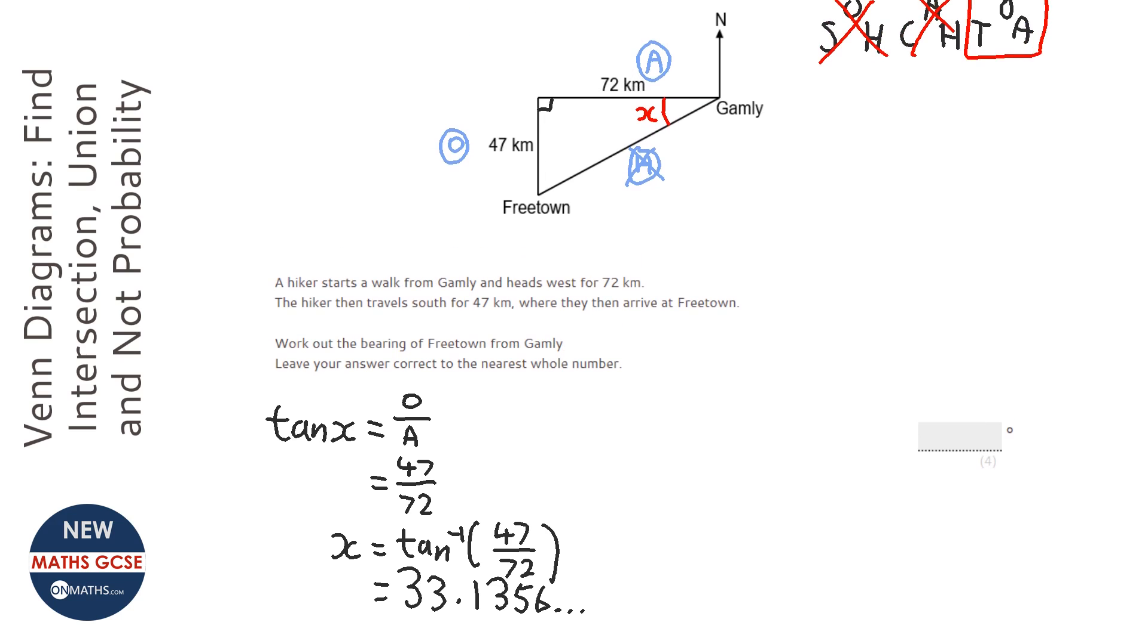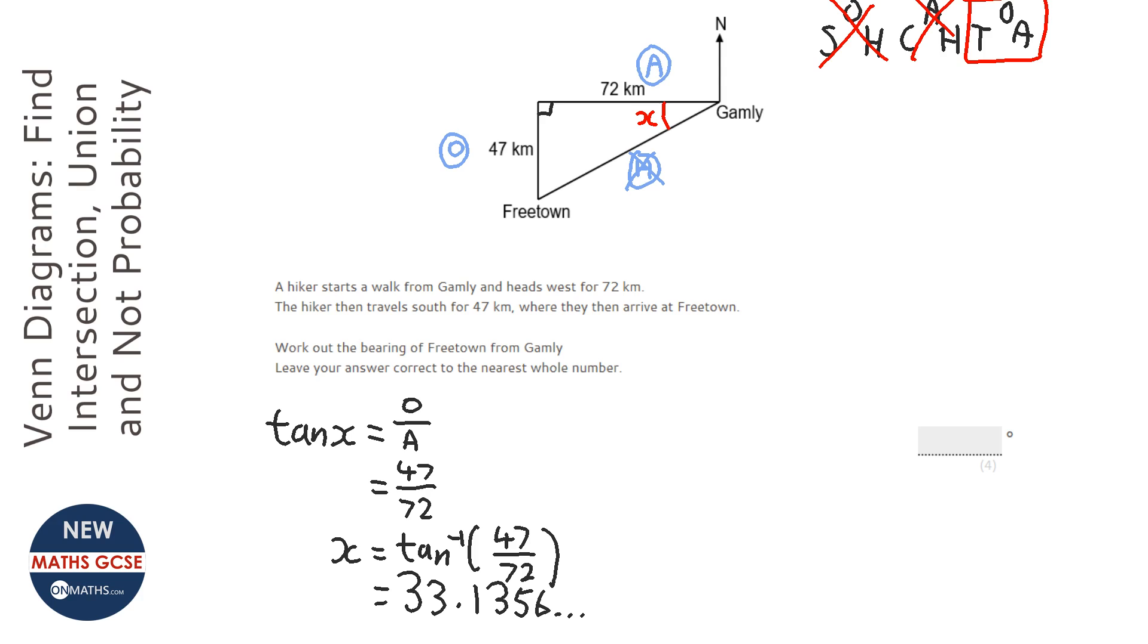OK, let's have a look. So x is 33, but we still haven't got a bearing. What we can do is work out what this one is, and I'm going to call that y. So to work out what y is, it's going to be 33.1. Well, we're looking for a nearest whole number, so let's call that 33.